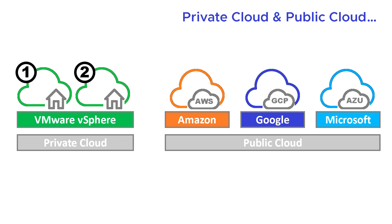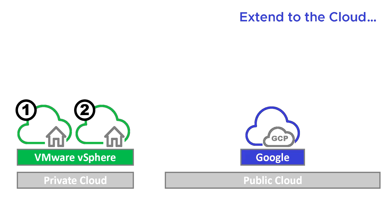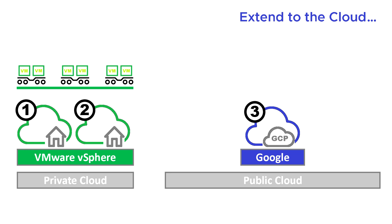The most common use cases are things that people want to do with private cloud and public cloud. The first one is to extend the data center into the cloud. We take our two data centers and add an additional data center using a public cloud provider, so we essentially have a third data center. We've still got our original VMware platform running VMware-flavored virtual machines, and now we've got a new Google GCP-flavored platform running Google-flavored virtual machines. Some people are okay with that, but others realize they now have two different types of hypervisor and two different types of virtual machines and can't mix and match between them.